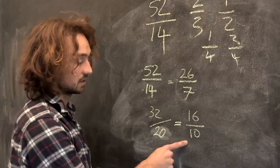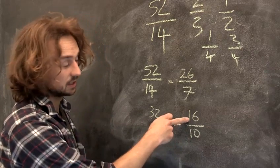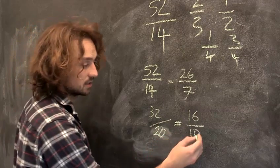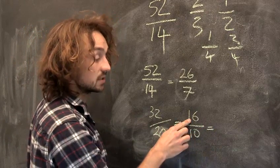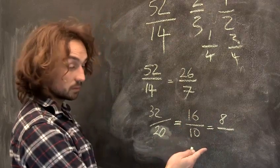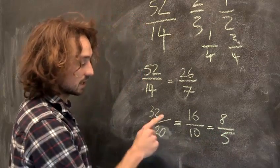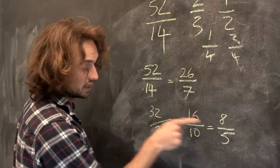But when we get to this, we can simplify it further. Does 2 go into 16? Yes, it does. Does 2 go into 10? Yes, it does. So 16 divided by 2, well, that's 8. Now I've divided the top by 2, so I have to divide the bottom by 2. 10 divided by 2, that's 5. So that is the same as that, but that's simpler.